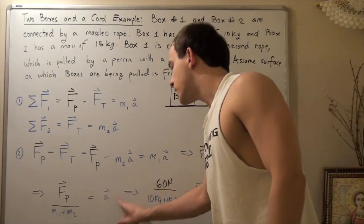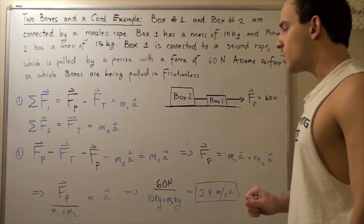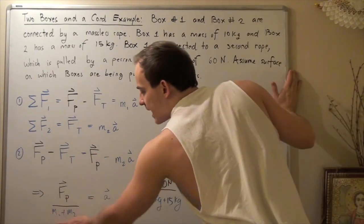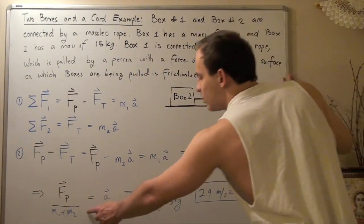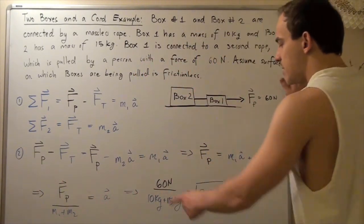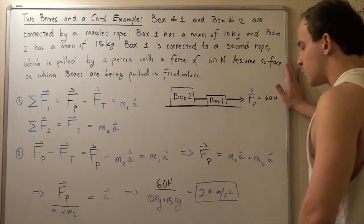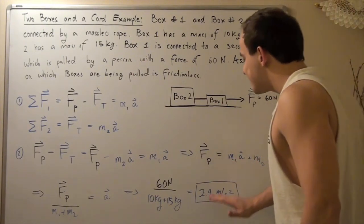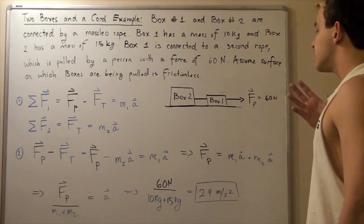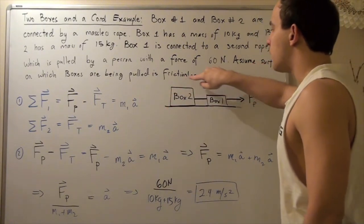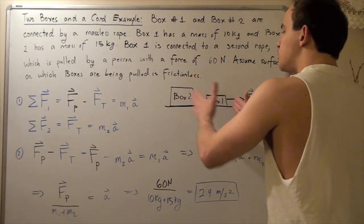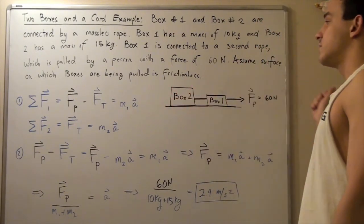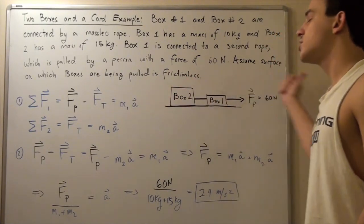So the acceleration equals the pulling force divided by the sum of the two masses. Plugging in the values: 60 Newtons divided by the total mass of 25 kilograms gives us 2.4 meters per second squared. This is the magnitude of the acceleration of both objects in the positive x-direction, treating both objects as a single system.